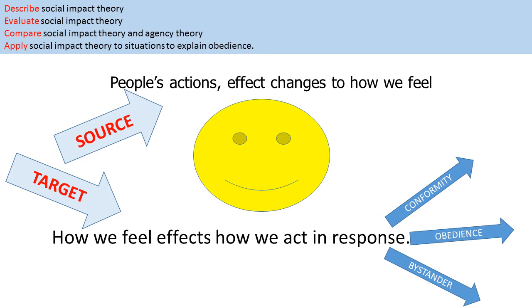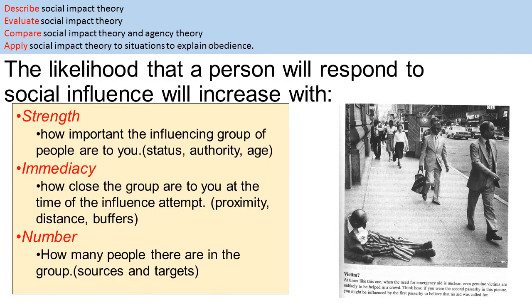Latane suggests that people's actions affect and change how we feel, and this response will produce a change within conformity and obedience. He also uses this to explain the bystander effect. The likelihood that a person will respond to social influence will increase with strength, immediacy and number.